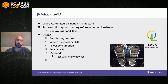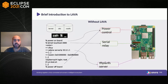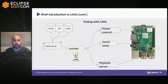Without LAVA, developers manually power cycle the board, connect to the serial relay, set up their image via U-Boot or SD card, run test scripts, collect results, and power off. LAVA completely automates this. There are two essential parts: a LAVA server and a LAVA worker.